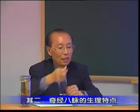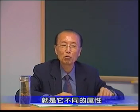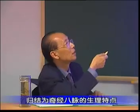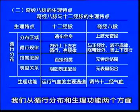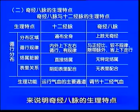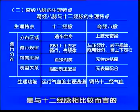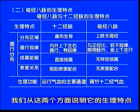奇经八脉的生理特点——为什么在这里单独讲生理特点，而12经脉不讲呢？因为奇经八脉是12经脉别道奇行，这八条经脉在生理上有与12经脉不同的特征。我们从循行分布和生理功能两个方面来说明奇经八脉的生理特点，这是与12经脉相比较而言的。